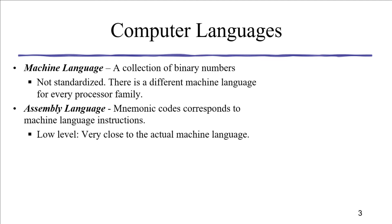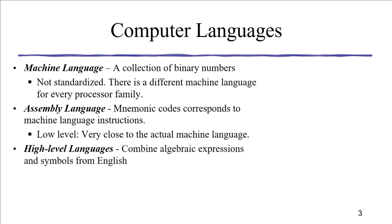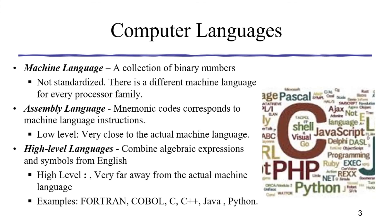Assembly language or high-level language programs need to be translated into machine language. Ultimately, machine language programs are executable by the computer. High-level languages combine algebraic expressions and symbols from English. They are called high-level because they are much above the level of machine language — very far away from the actual machine. There are as many as 135 or more computer programming languages developed since the first generation till date.